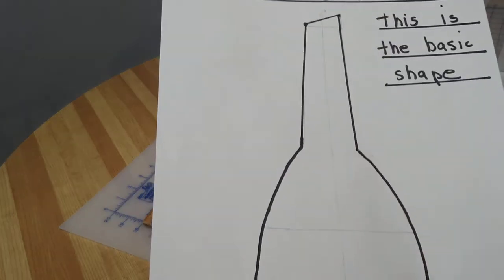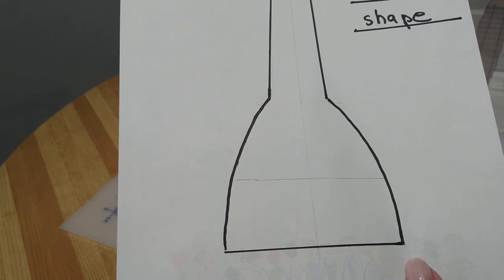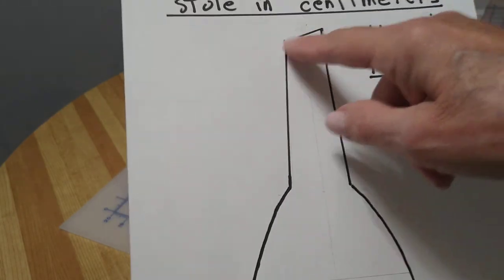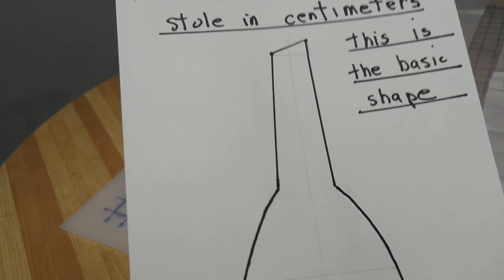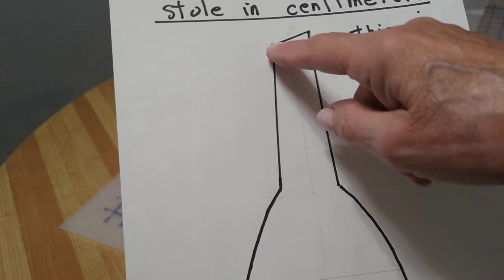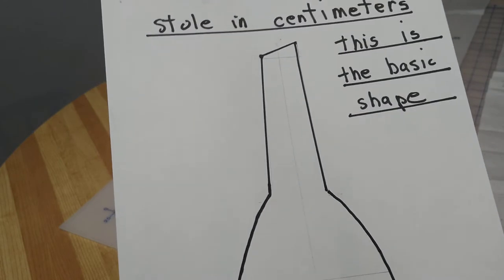This is a shorter version of the stole. It's belled at the bottom and has an angle at the top. When we are measuring for this, we will not include this little angle here. We're going to add it on at the end.